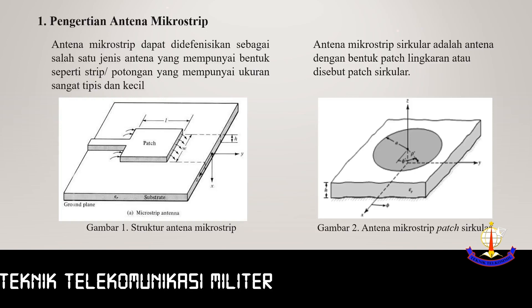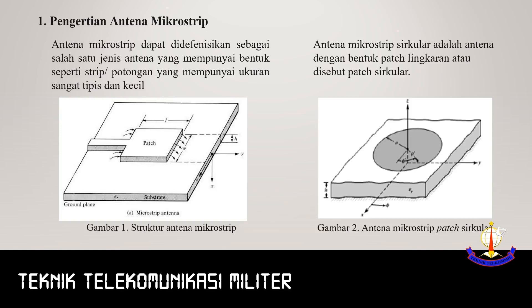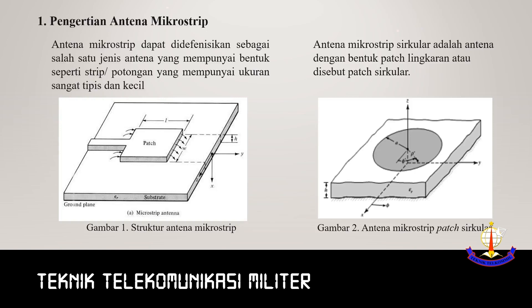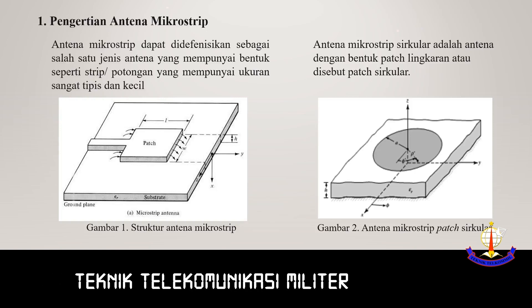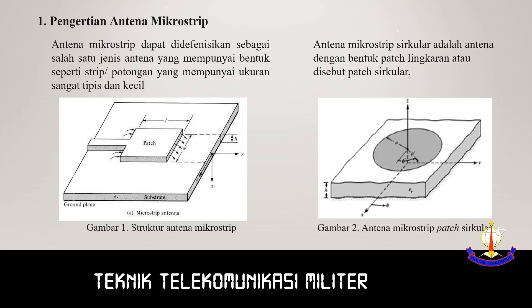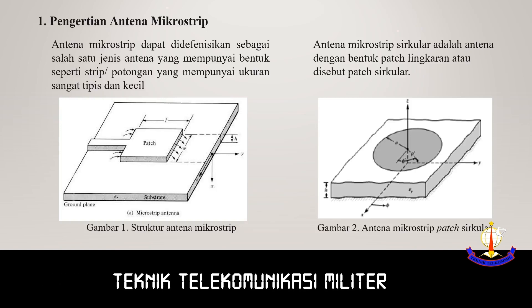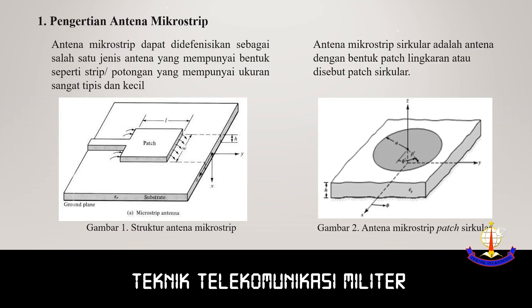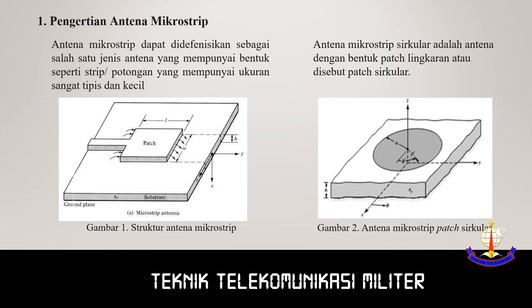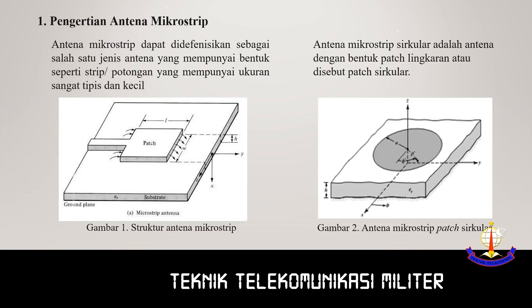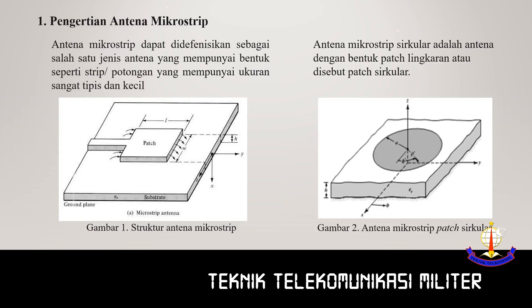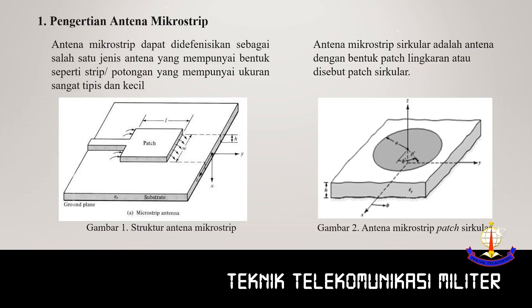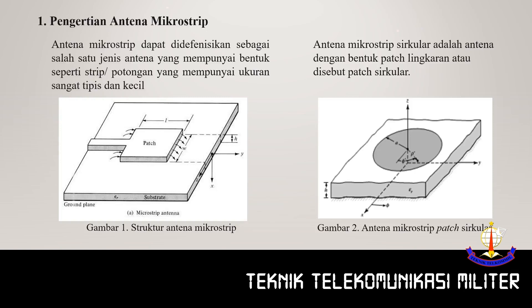Struktur dari antena microstrip yaitu: lapisan paling bawah disebut ground plane, lapisan tengah disebut substrate, sedangkan lapisan paling atas disebut patch. Patch dapat berbentuk persegi atau sirkular. (The structure of a microstrip antenna: the bottom layer is called the ground plane, the middle layer is the substrate, and the top layer is called the patch. The patch can be square or circular.)